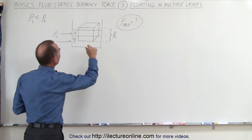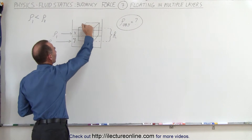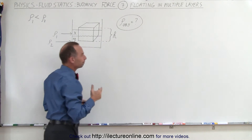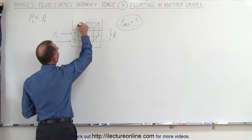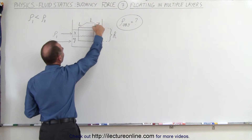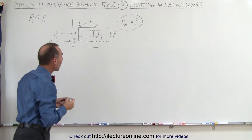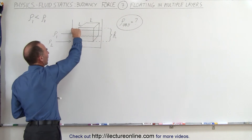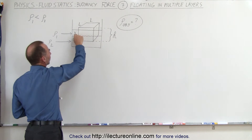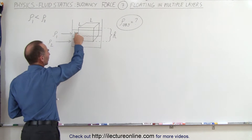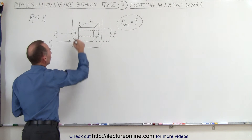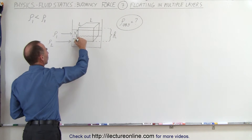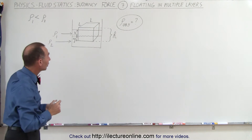Notice that the object is floating because a portion of it sticks above the liquid. If we want to find the density of the object, let's say the object has a square top, L by L — that's the area of the top — and the height of the object is h. The amount submerged in the first liquid layer is x, and the amount submerged in the second layer is y.